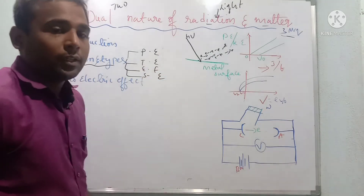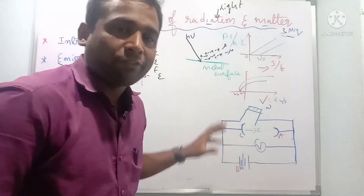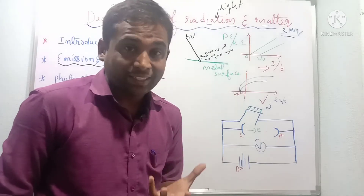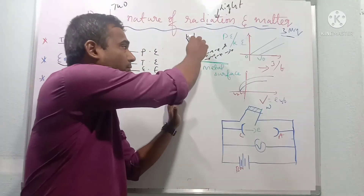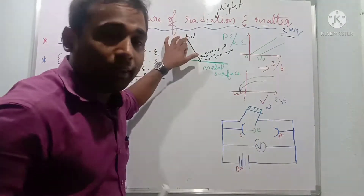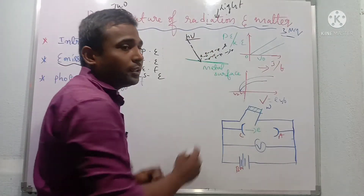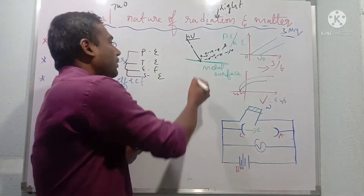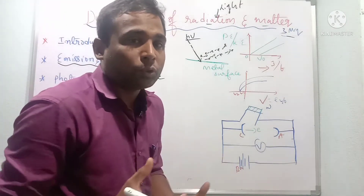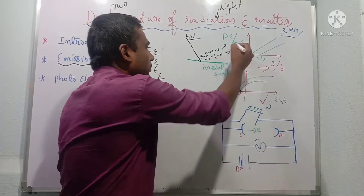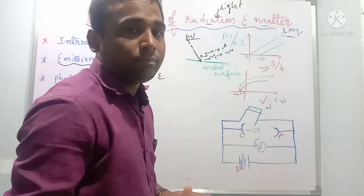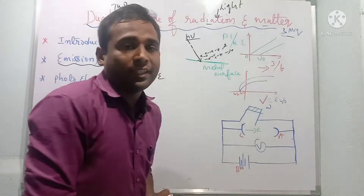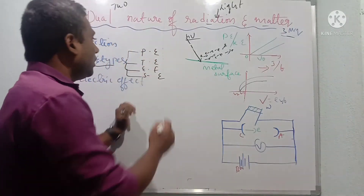Photoelectric emission: 'photo' means light. When light falls on the metal surface, the energy given by Max Planck's quantum theory — E = hν — is absorbed by electrons. After absorption of this energy, electrons come to the surface of the atom and begin to move out. This process of emission of electrons when light of suitable frequency falls on the metal surface is called photoelectric emission.